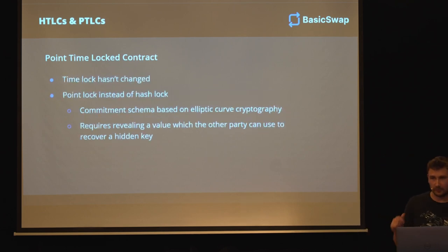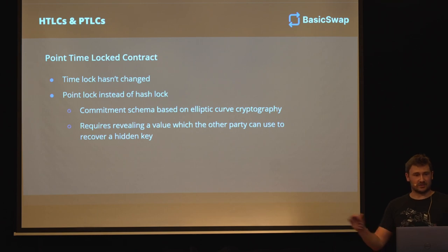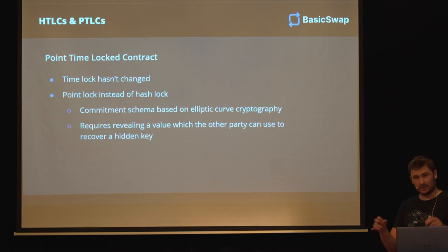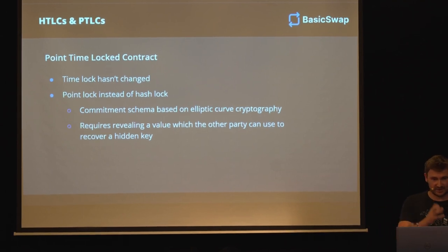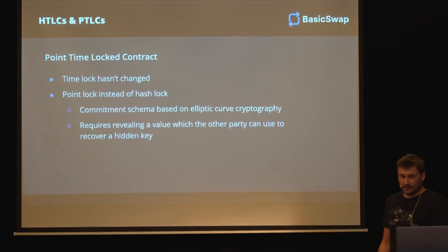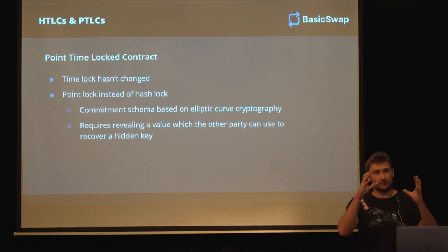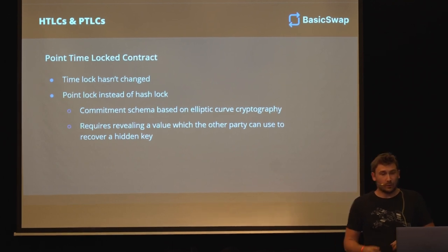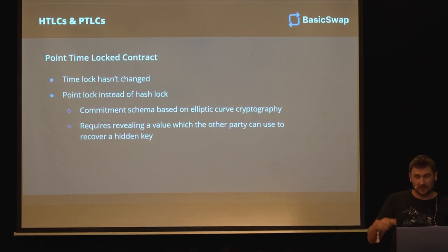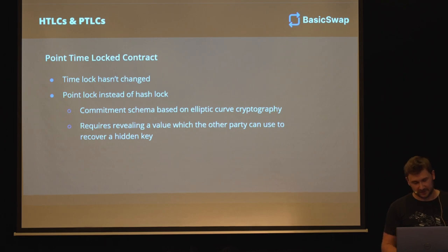What I want you to know about point time lock contracts is that the time lock hasn't changed - it's still the same, nothing complex there. The thing that has changed is what I refer to as the password condition. So instead of it being a hash or a hash lock where you have to give a secret that produces a garbled text, we change how we get to that secret and we use elliptic curve cryptography. Basically, how it works is you'll reveal a value publicly on the blockchain which only the other party can use to recover a hidden key. So it's the same secret commitment and it still gets revealed, but now it doesn't get revealed to everyone - it just gets revealed to the other party.